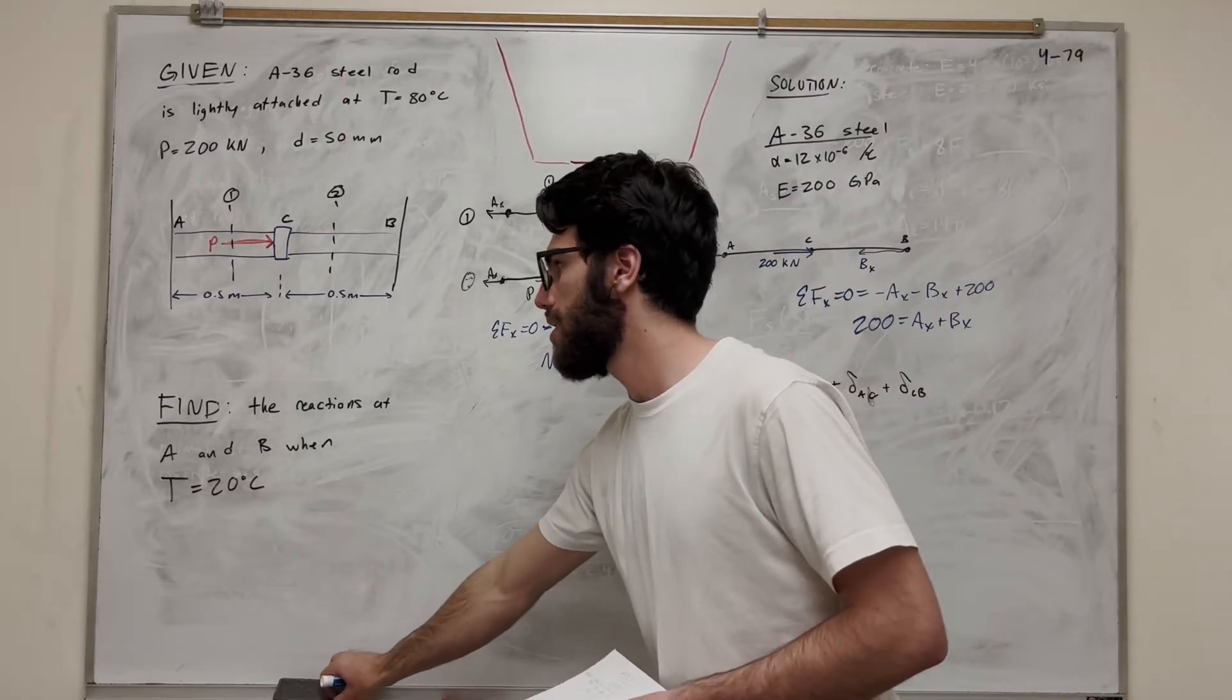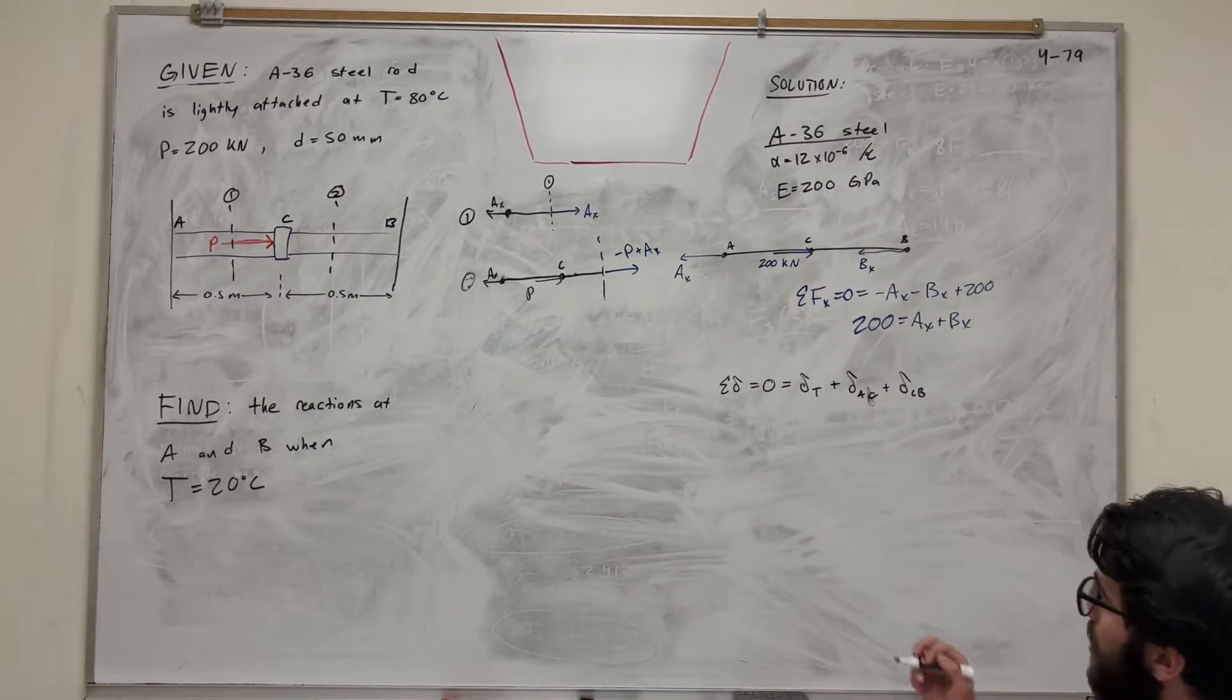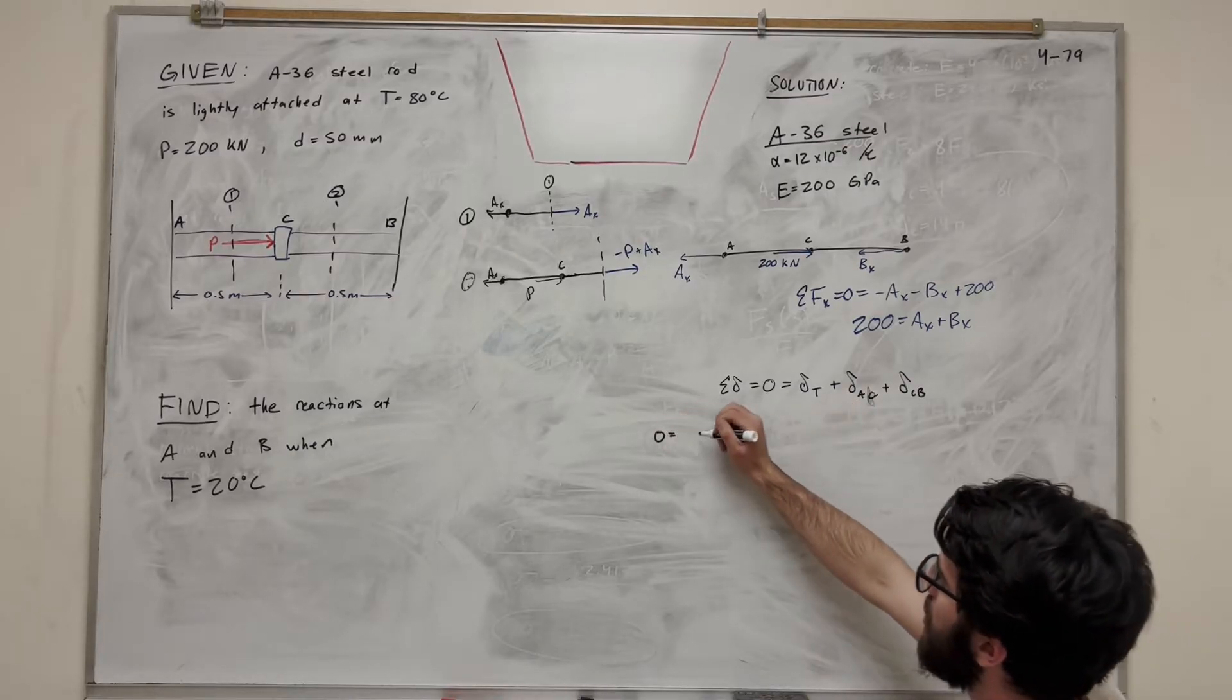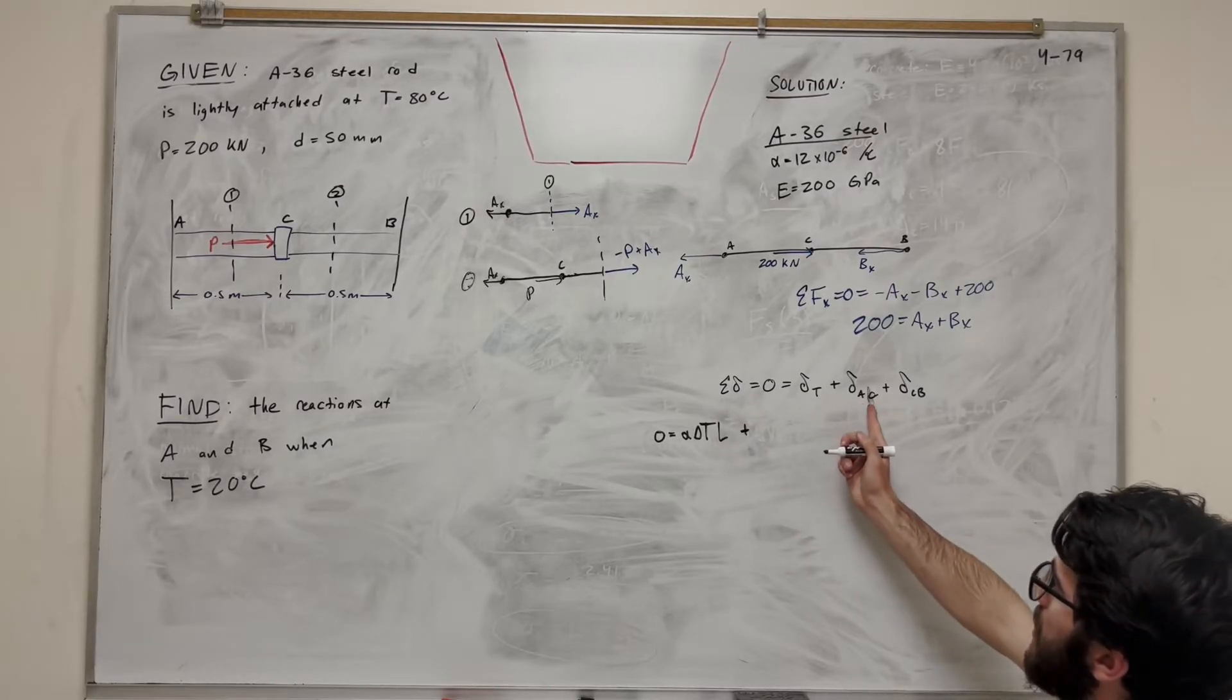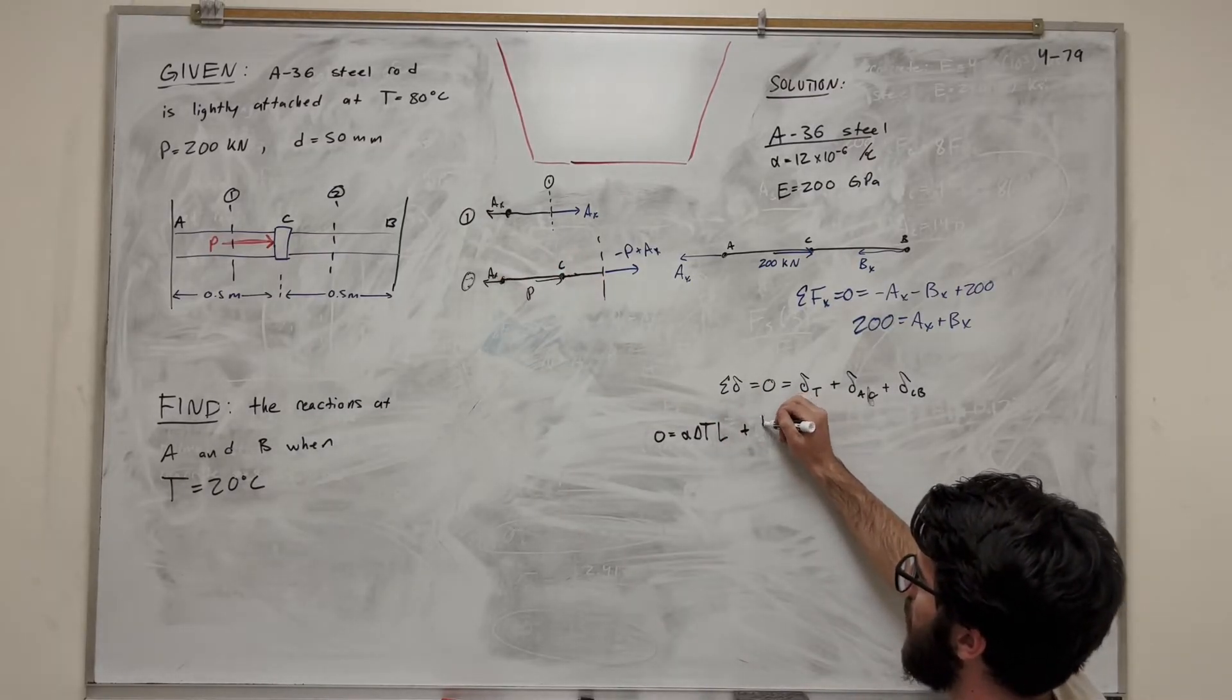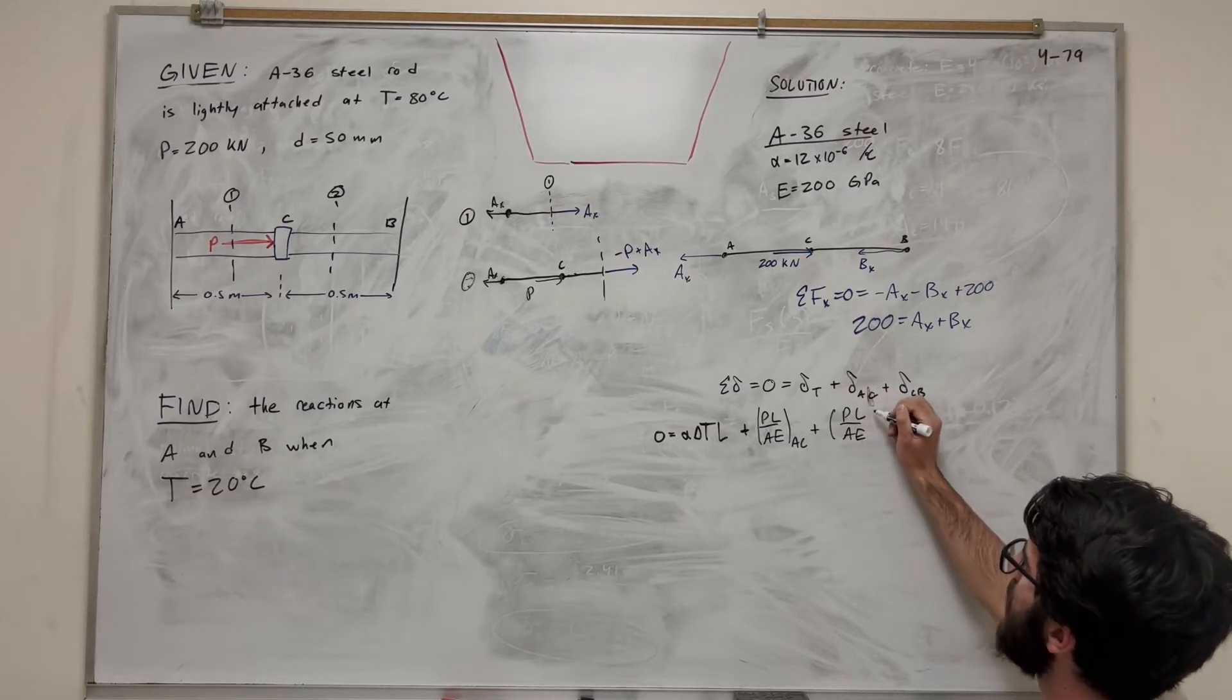So we've done these cross-sections, and now it's going to help us with this equation because we know what to plug in when we do the PL over AE. So I'm going to need a lot of space to write this, so I'm going to go out this way. So change in temperature, this is alpha delta T L, right? So then let's add it to this. So displacement A to C, right? It's going to be that first one we did. So it's going to be PL over AE, so PL over AE of AC. And we're going to add that to the next displacement, PL over AE of CB.